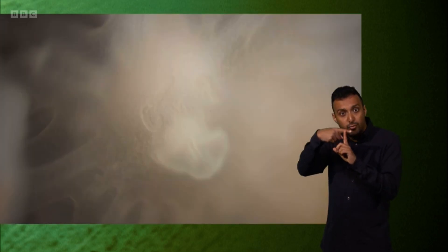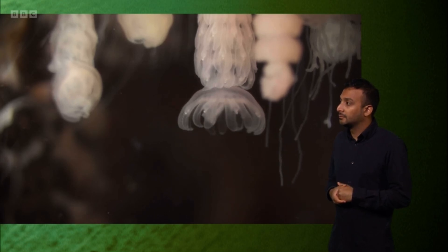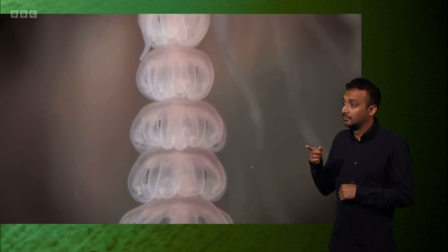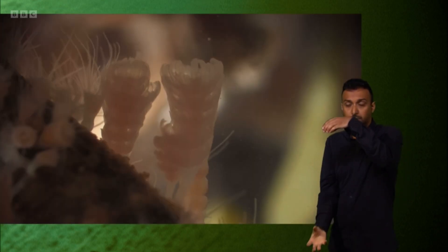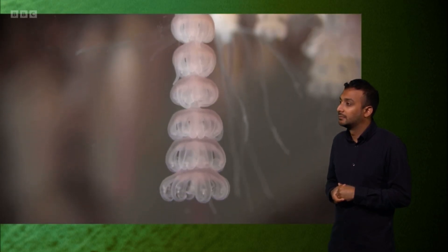And then, when conditions are perfect, the polyps transform. Morphing into a daisy chain of segments. Now, they're no longer polyps, but strobilla.